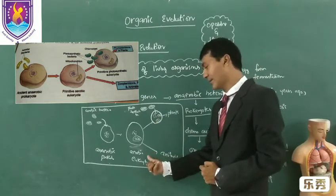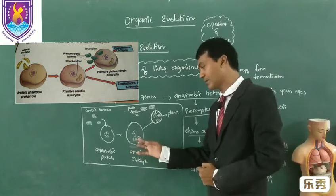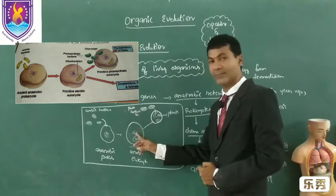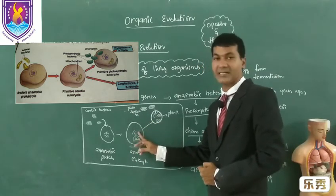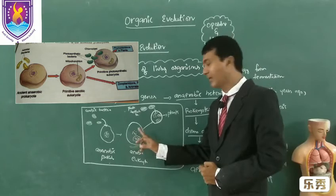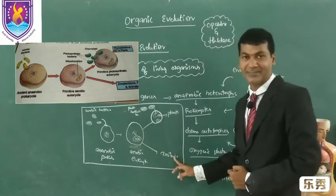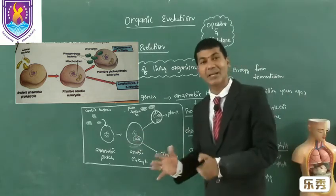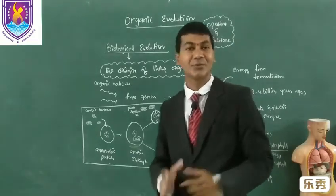Some eukaryotes did not receive photosynthetic bacteria, so no plastid is present in them, and they became animals. This is how we believe plants and animals evolved. This is regarding the origin of living organisms.